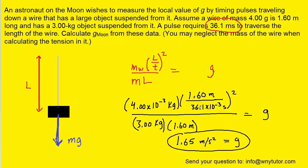Notice that when we plugged in the time, we converted it into seconds by multiplying by 10 to the minus 3. And then also for the mass of the wire, we changed it from grams into kilograms by multiplying the grams by 10 to the minus 3. So just be careful with the standard units there. But again, the final answer turns out to be 1.65 meters per second squared.